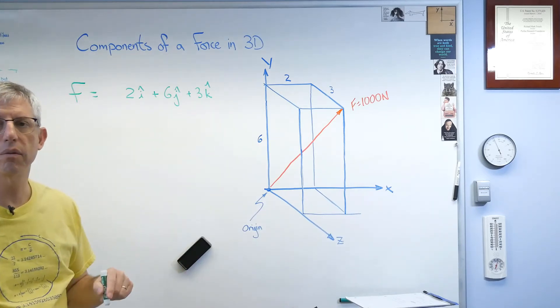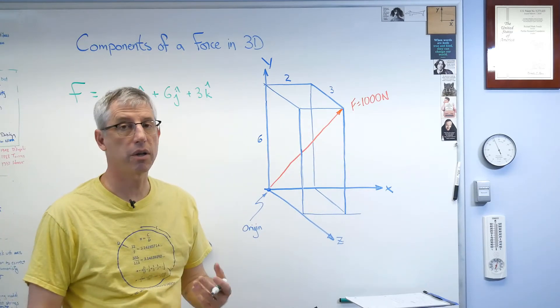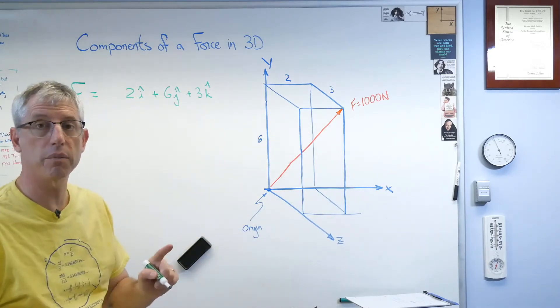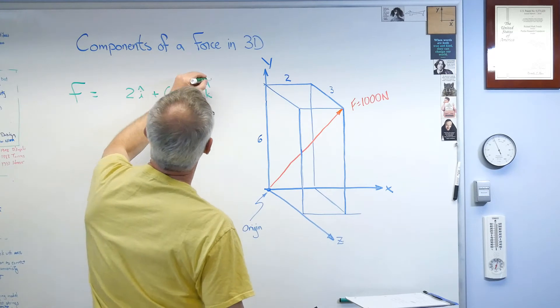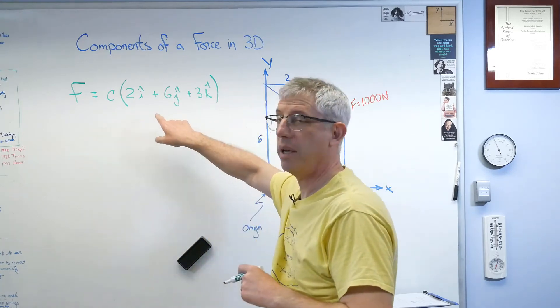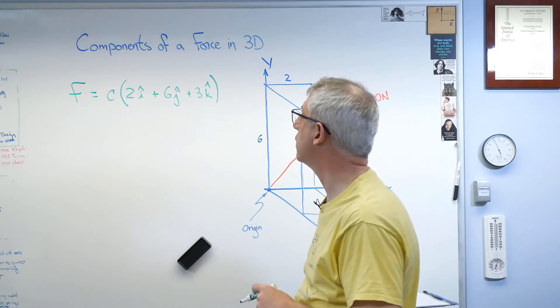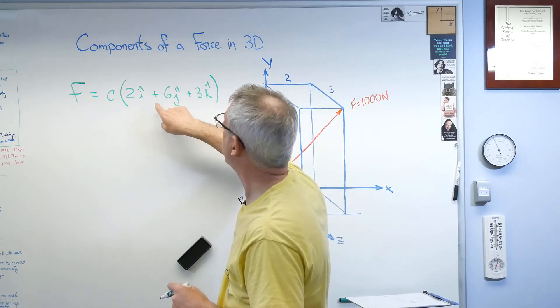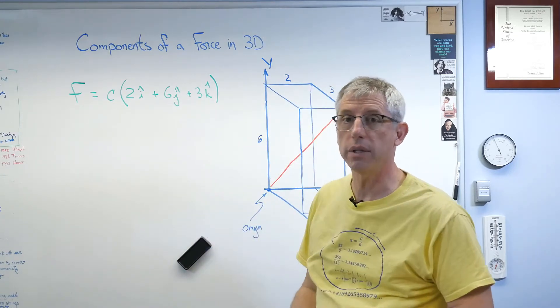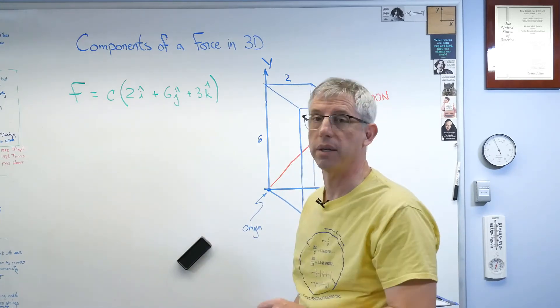Those give me the relative components, the relative directions, but the magnitudes aren't right, because the sum total of these doesn't add up to 1,000 when I apply the Pythagorean theorem. So let's fix that. Let's multiply these by a constant, and we don't know what that constant is, but we're going to figure it out here in a second. So 2i, 6j, 3k. That's a vector expression now. And there's no way to simplify this. This is it. This is as simple as it gets. There's no way to reduce it to anything more basic than this.